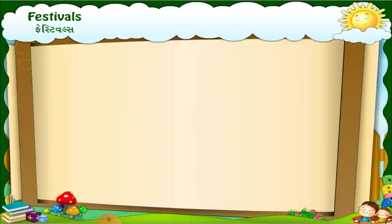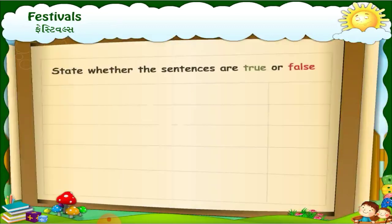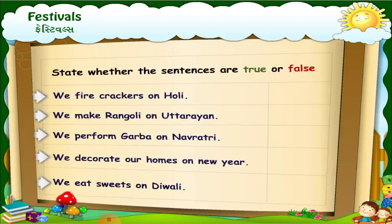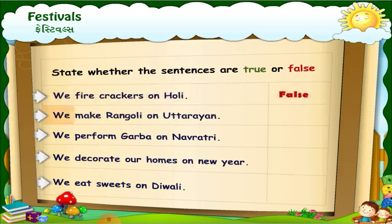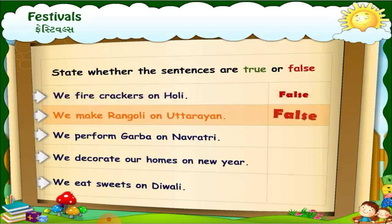Now, based on these festivals, let us read the given sentences and check whether they are true or false. We fire crackers on Holi — False. We fire crackers on Diwali — True. We make rangoli on Uttarayan — False. We make rangoli on Diwali — True.